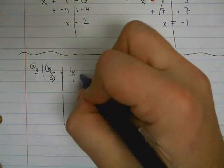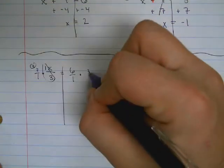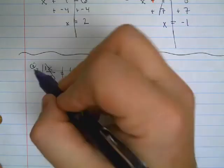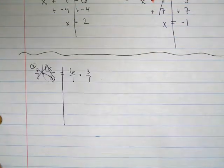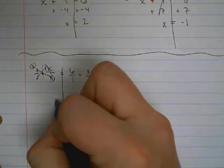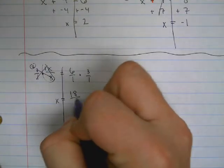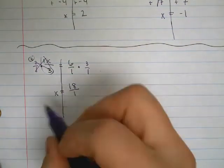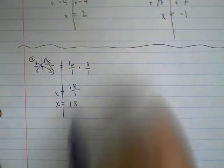I'll do the same thing to this side, multiplying by 3 over 1. Those will cancel. And we'll have x equals 18 over 1. Simplifying, x equals 18.